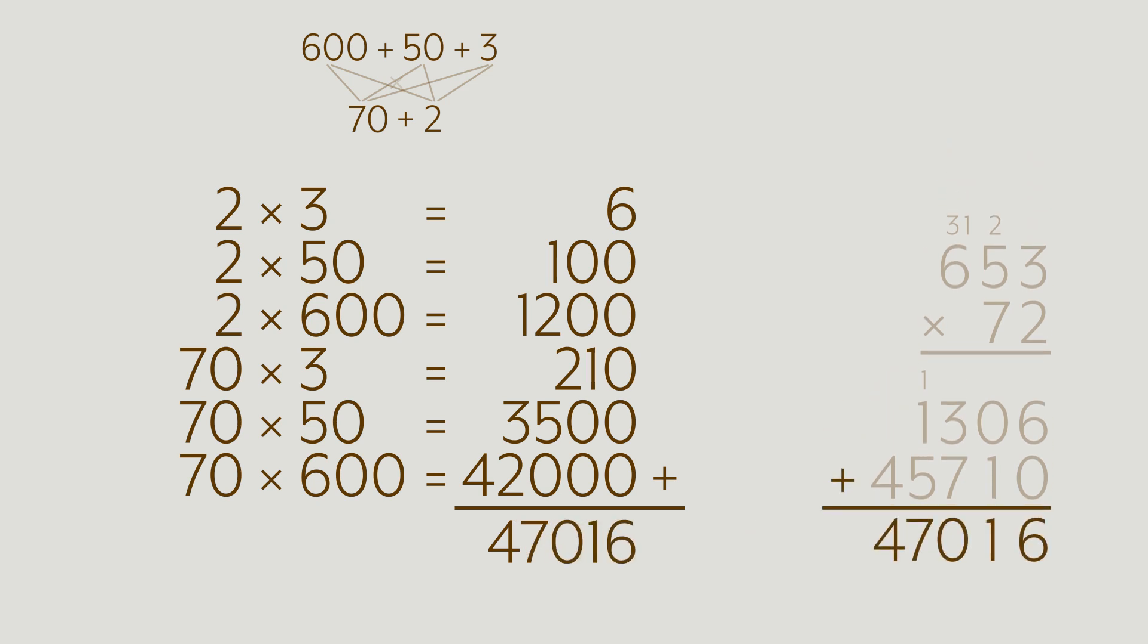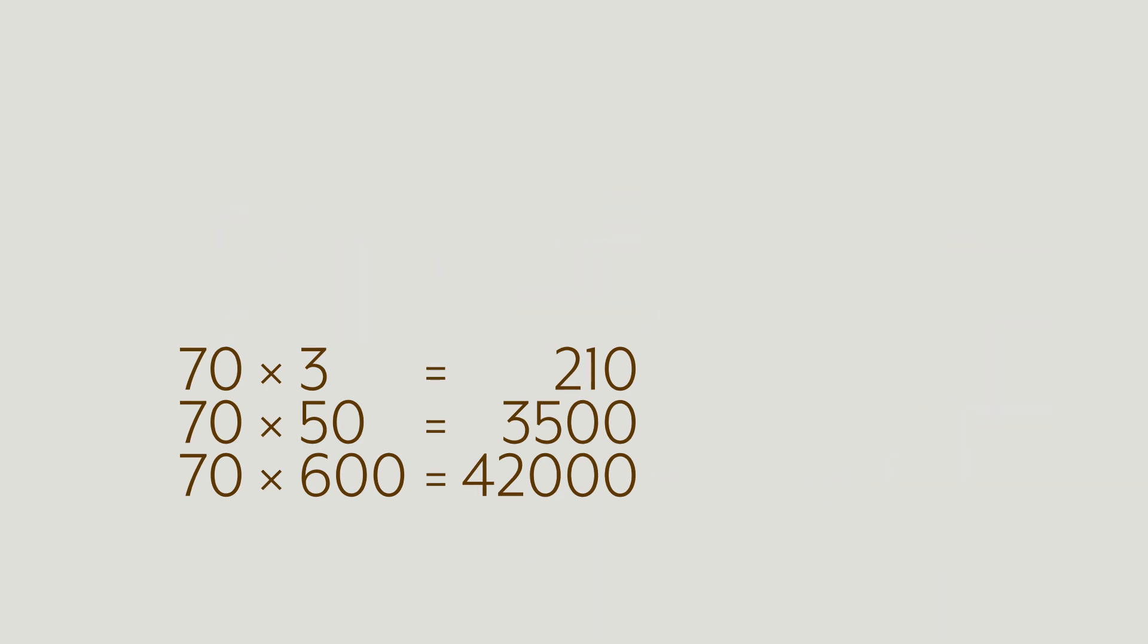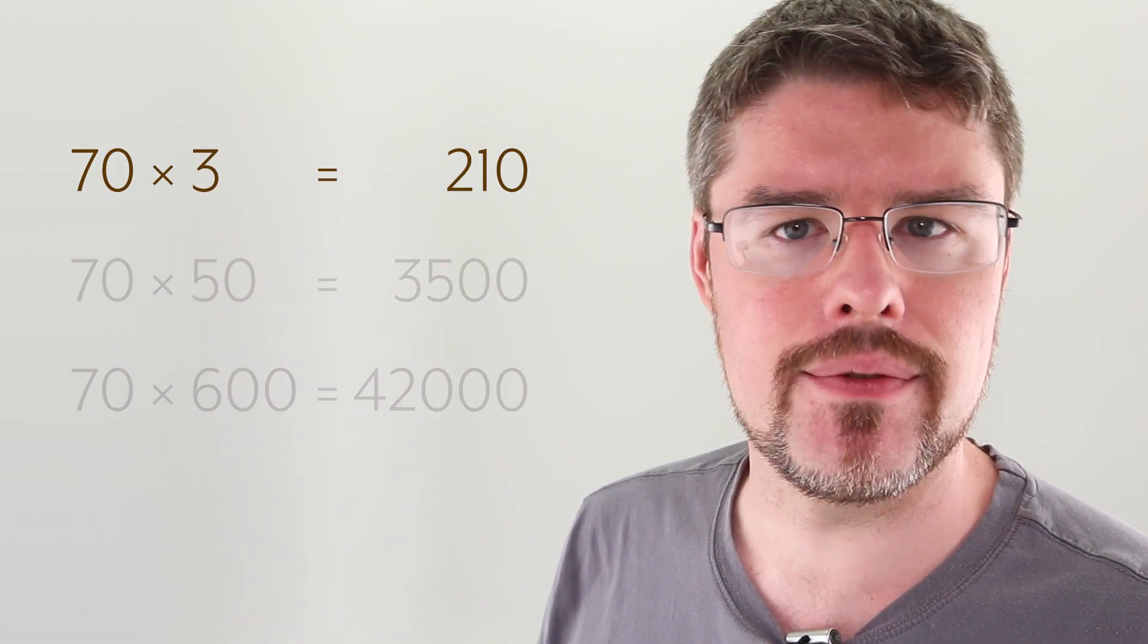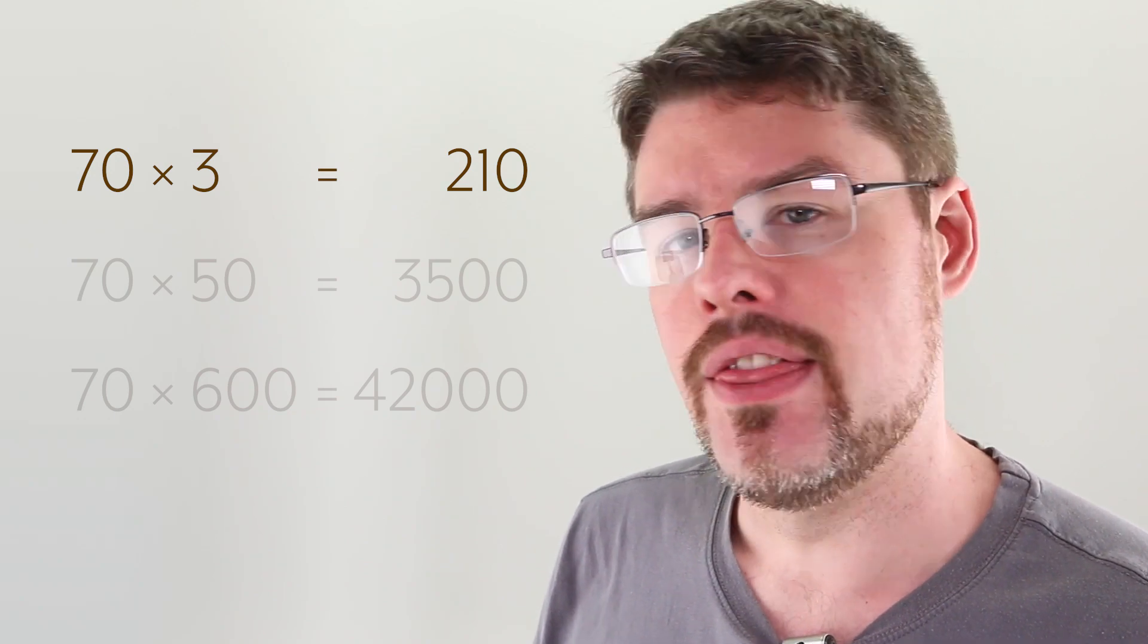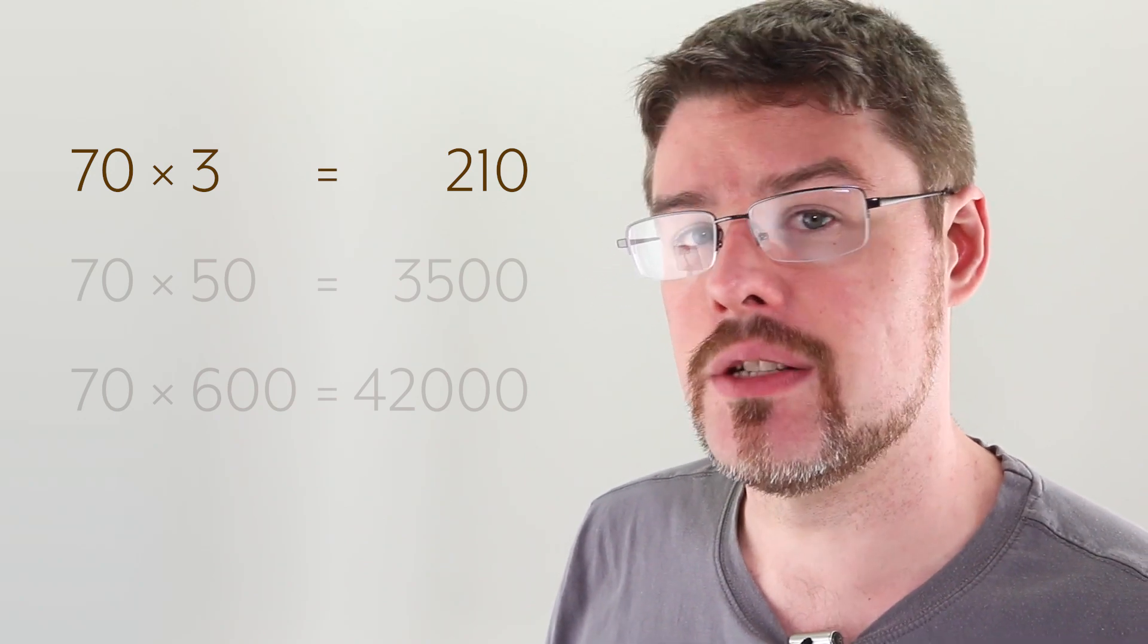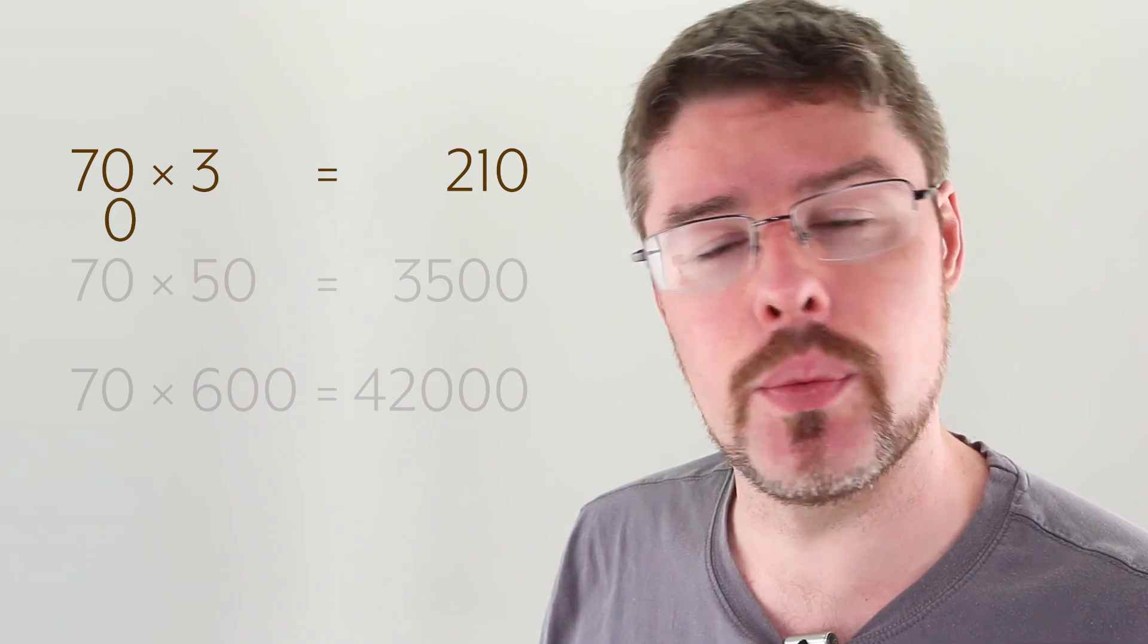Look at the first three numbers here. What we have is 6 plus 100 plus 1200. That right there is the 1306 that we had for the first part of our algorithm earlier. You'll notice that the 100 had the carry. That one in the 100 carried to the very top. But let's look at those last three numbers. 70 times 3 gave us 210. That's 210 with a zero at the end because 70 had a trailing zero that we could tack on the end.